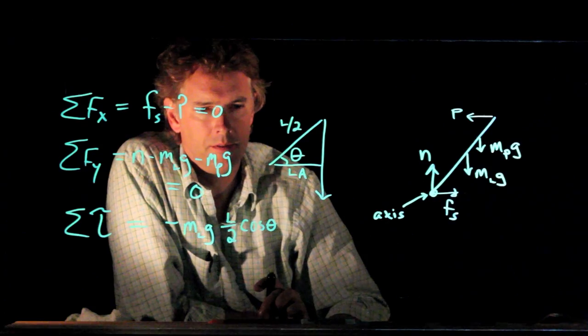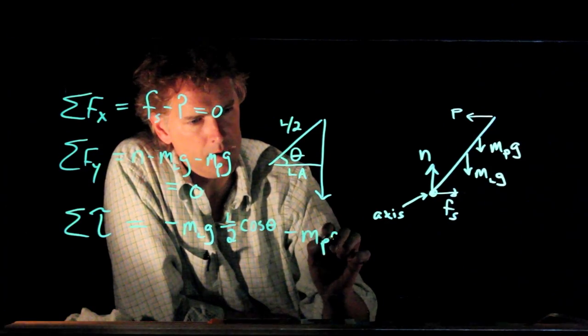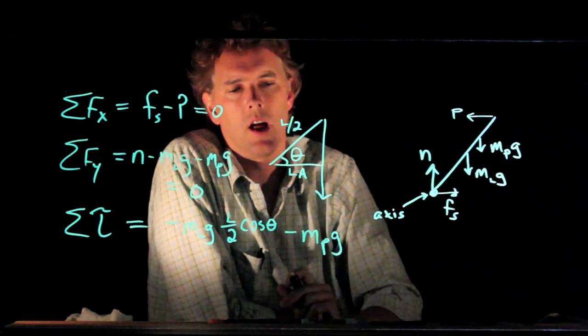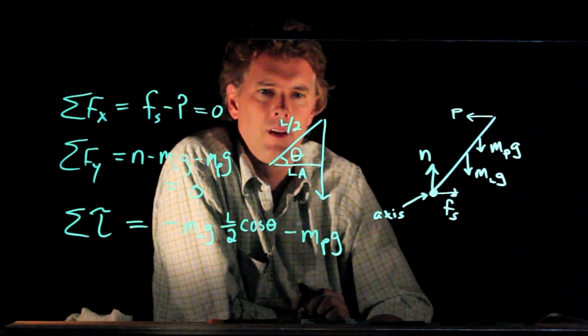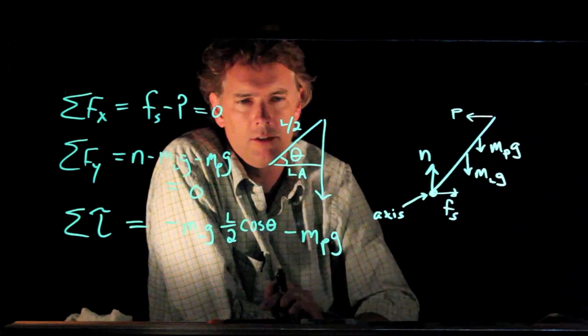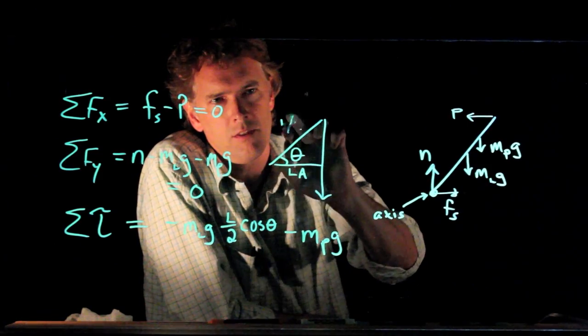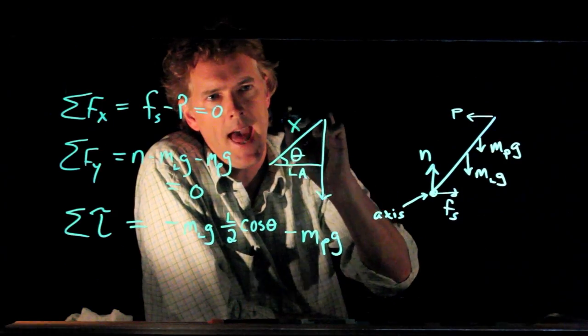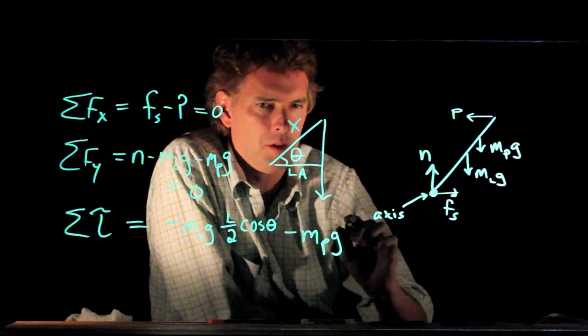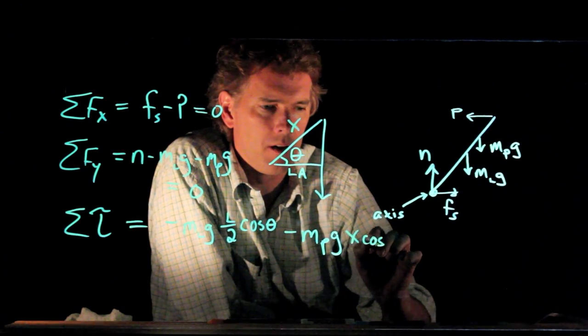What about the person? The person is also trying to rotate this thing in the clockwise direction. What is the lever arm for the person? Well, it's the same idea as we just talked about right here, except the distance is no longer l over 2. It is x. And so this becomes x cosine of theta.